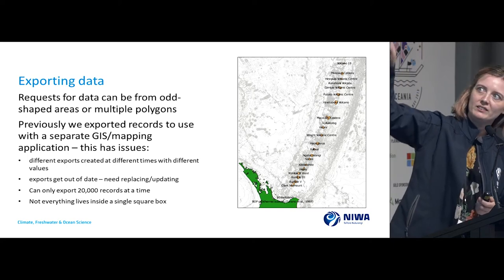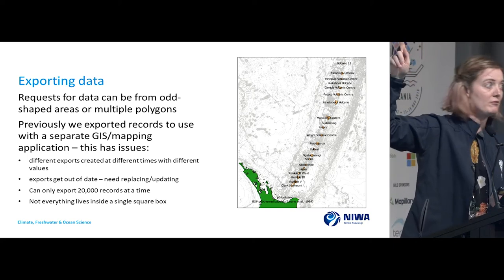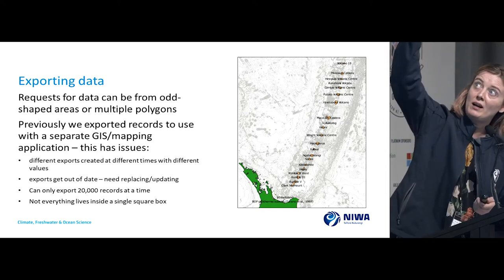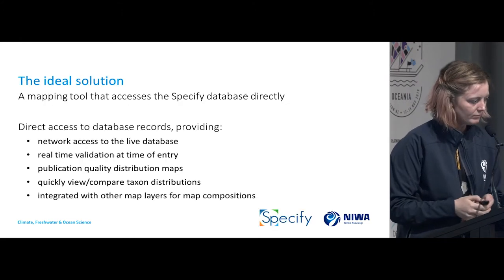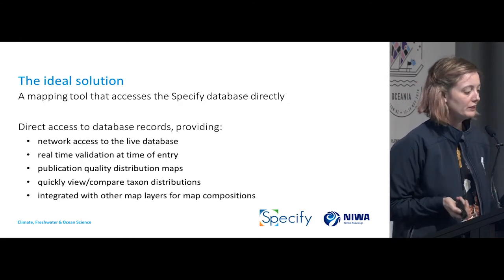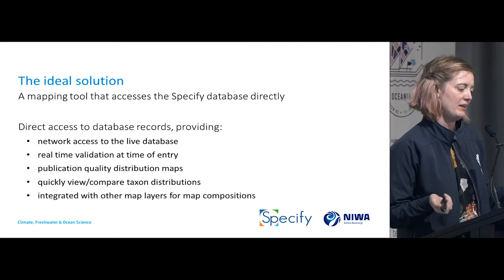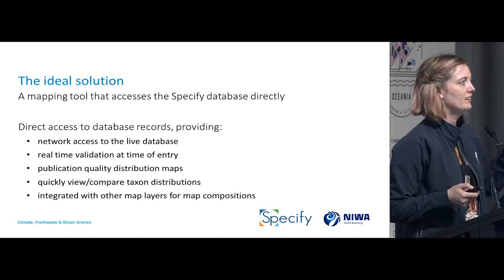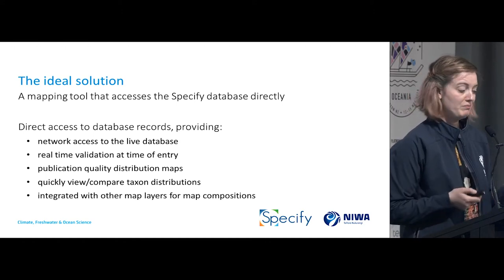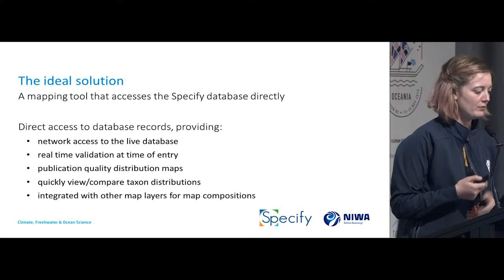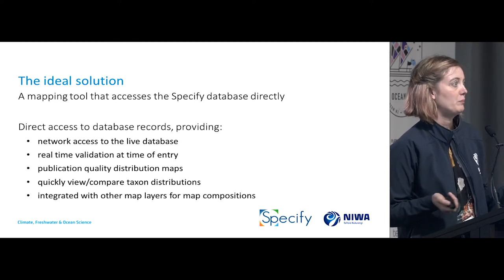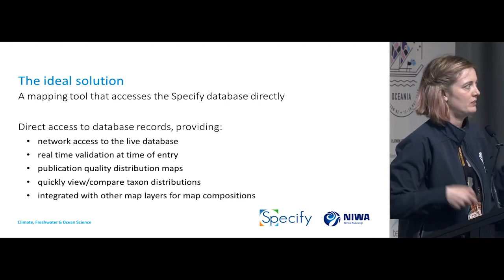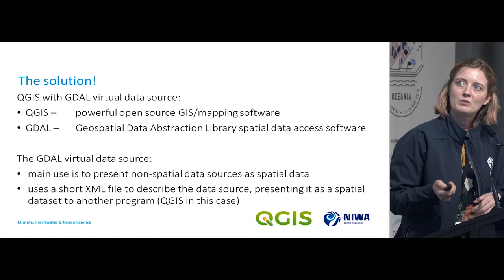This map shows the polygons where there's vent activity — that's where there's an undersea volcano or seamount up the Kermadec Arc north of New Zealand. An ideal solution for us is something that accesses our database directly, so we can go right into the live database with real-time validation of our points as we enter them — making sure they're not plotting in the middle of land, for example. We also want to be able to produce publication quality maps and quickly compare distributions, integrating with all sorts of other map layers.